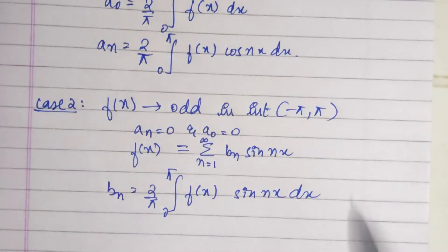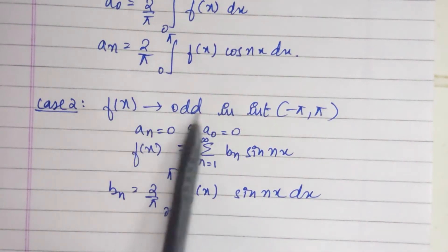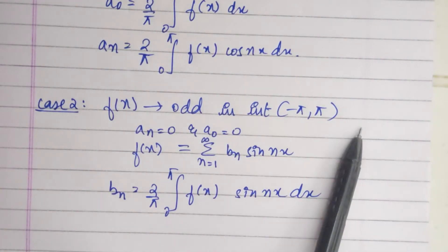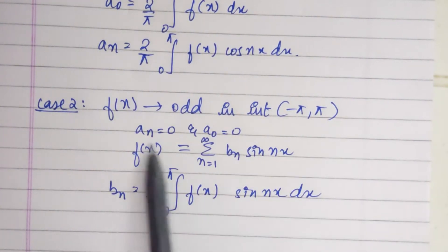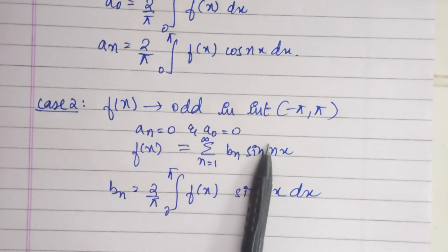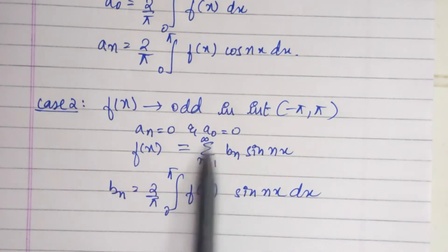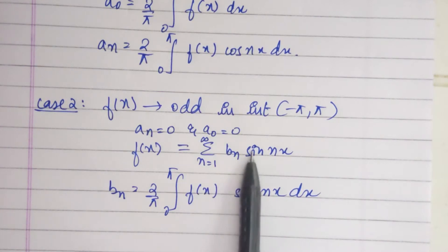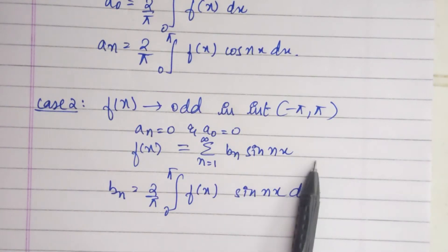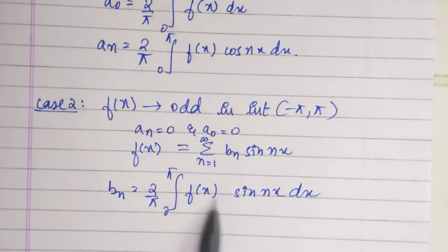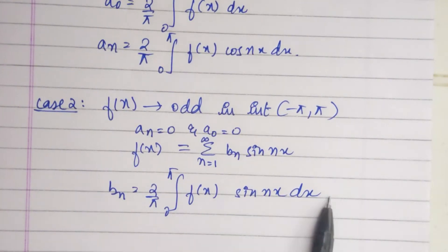Case 2: When the function is an odd function in the interval minus pi to pi, then a n equals 0 and a naught equals 0. So f of x equals summation from n equals 1 to infinity of b n sin nx, and b n equals 2 by pi times the integral from 0 to pi of f of x sin nx dx.